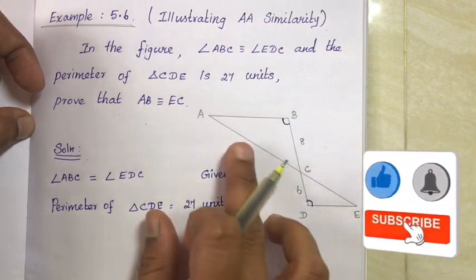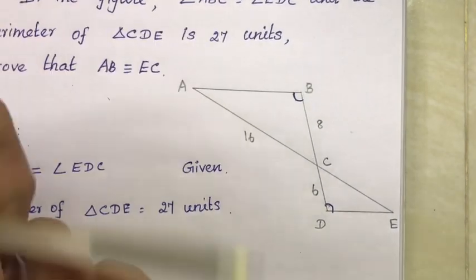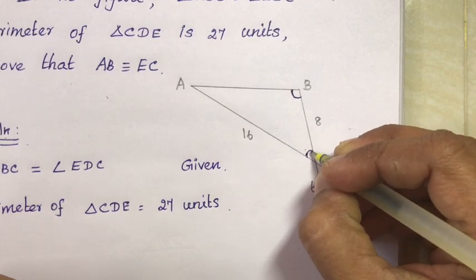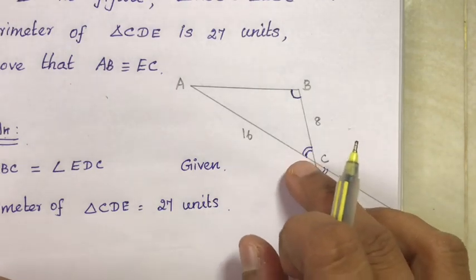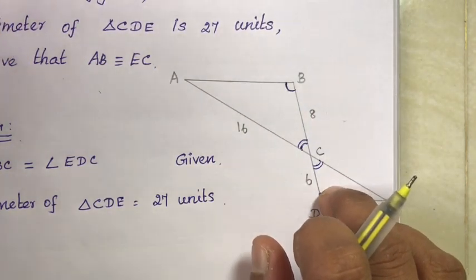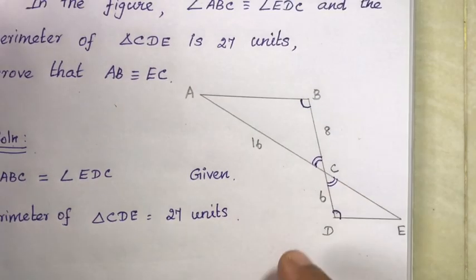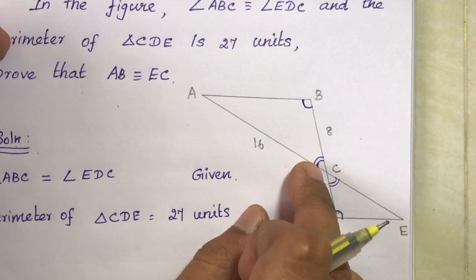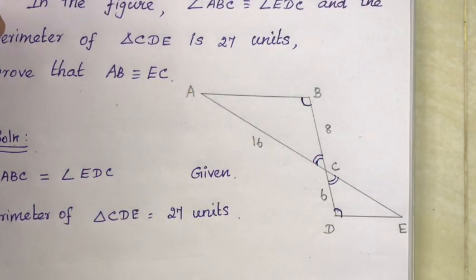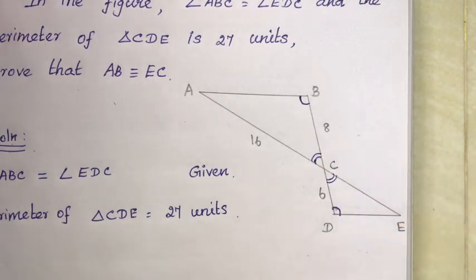This is a line, this is a line — these two lines intersect, and intersecting lines form vertically opposite angles that are equal. So this is the intersect, forming vertically opposite angles. These angles are equal.